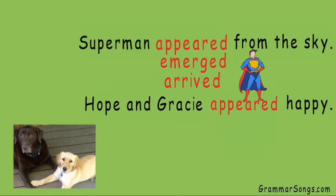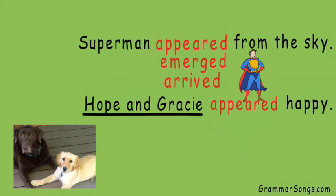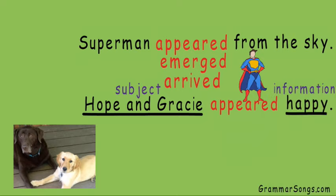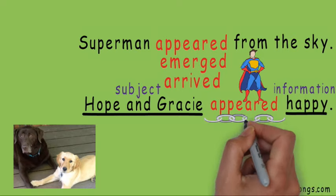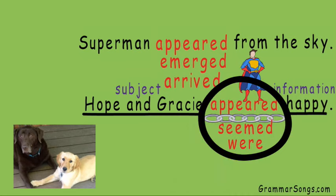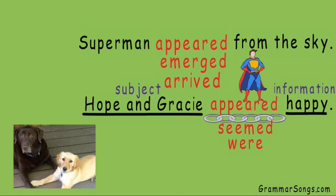Let's look again at the second sentence: Hope and Gracie appeared happy. Hope and Gracie are who or what my sentence is about, so they are my subject. The information I'm learning is that they're happy. Hope and Gracie aren't doing anything — they are just happy. The verb appeared in this sentence is connecting the subject, Hope and Gracie, to more information. They're happy, so appeared is acting as a linking verb in this sentence. Another clue is that I can substitute the verb appeared for other linking verbs that still make sense: Hope and Gracie seemed happy, or Hope and Gracie were happy. The fact that I can substitute appeared with other linking verbs that make sense helps me understand that appeared is being used as a linking verb in this sentence.